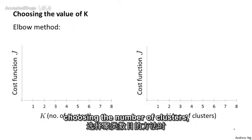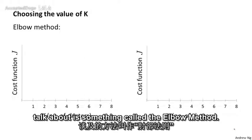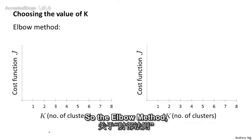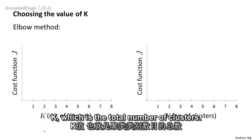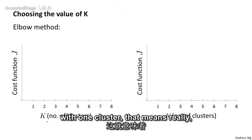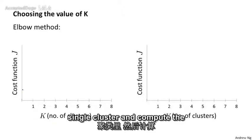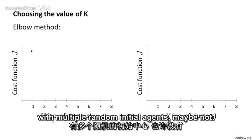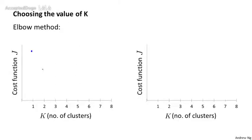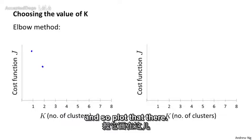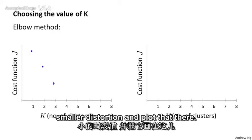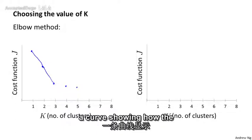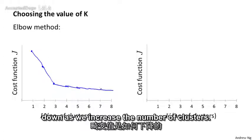One method that people sometimes talk about is called the elbow method. What we do is vary k, the total number of clusters. We run k-means with one cluster — everything gets grouped into a single cluster — and compute the cost function, or distortion J, and plot that. Then we run k-means with two clusters, maybe with multiple random initializations, and we should get a smaller distortion. Then with three clusters, hopefully an even smaller distortion, and so on with four, five, and more clusters.